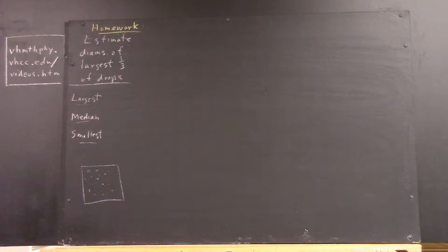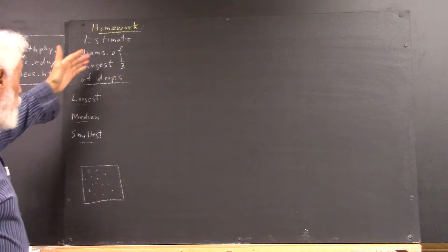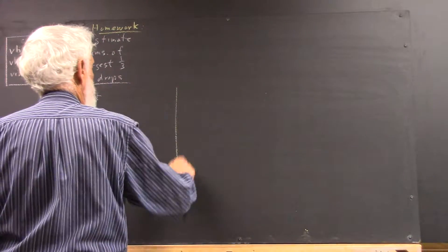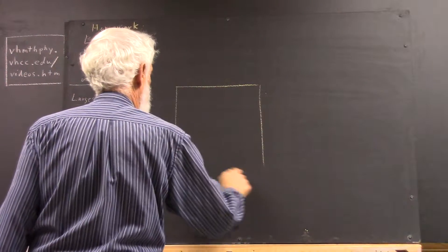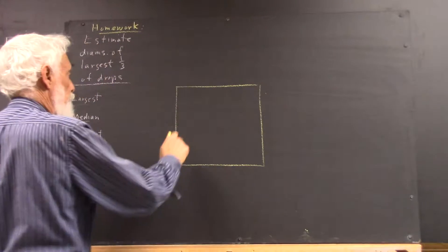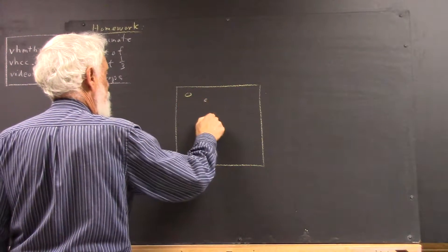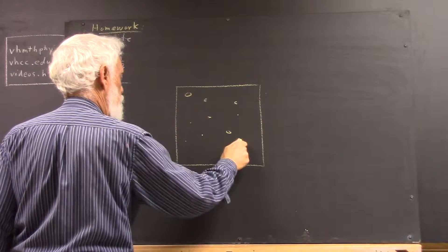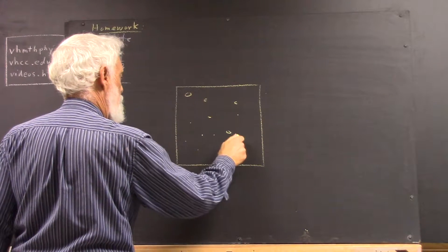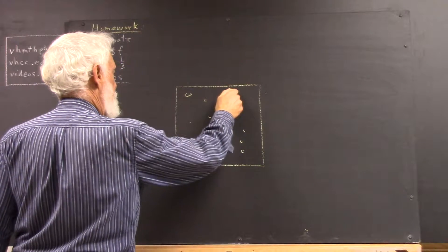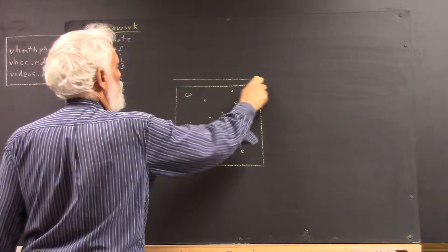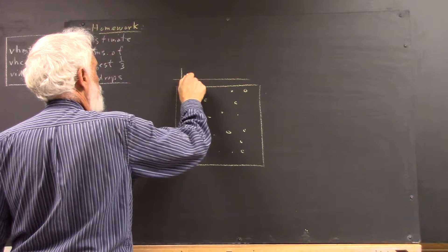It's to estimate the diameters of the largest one-third of your drops. So let me draw a picture here just to illustrate what I mean. If this is one of your rectangles and you've got a bunch of drops